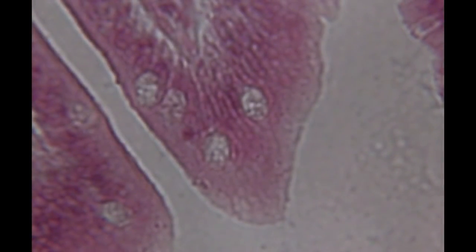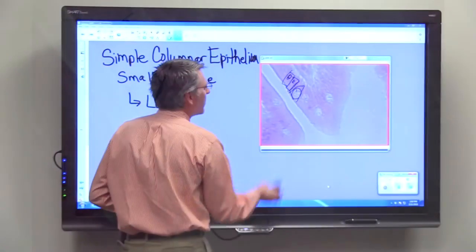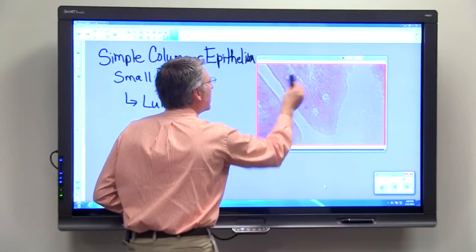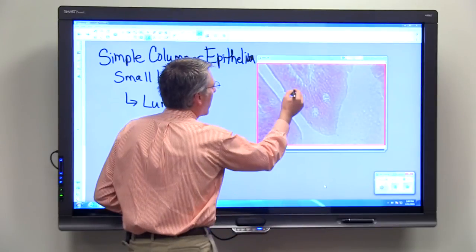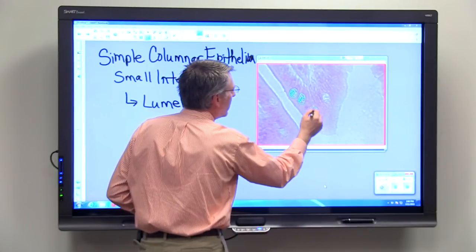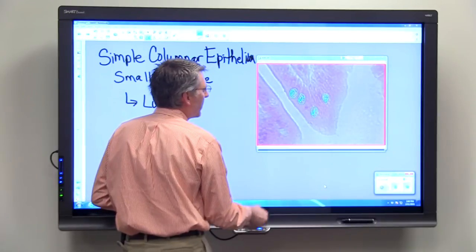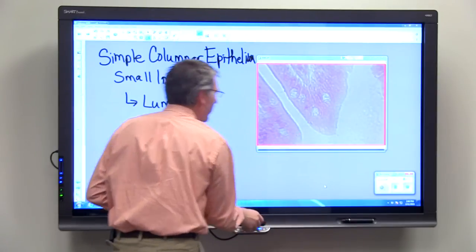This is an example of the simple columnar epithelium, and you can see a cell here with its nucleus, a cell here with the nucleus. Then here's a cell - and this structure is called a goblet cell. You can see this area is a goblet cell. The goblet cells secrete mucus. Simple columnar epithelial tissue will have some goblet cells that are involved with mucus secretion.